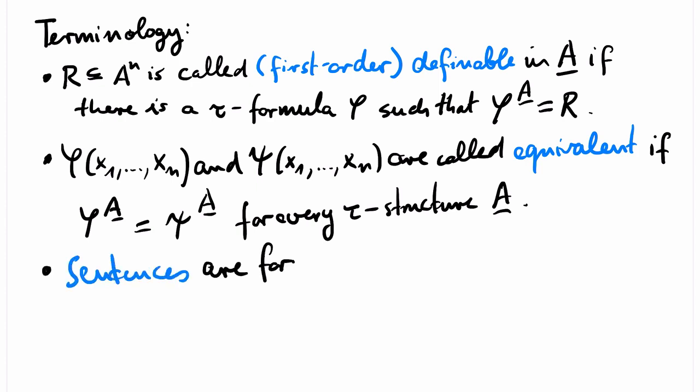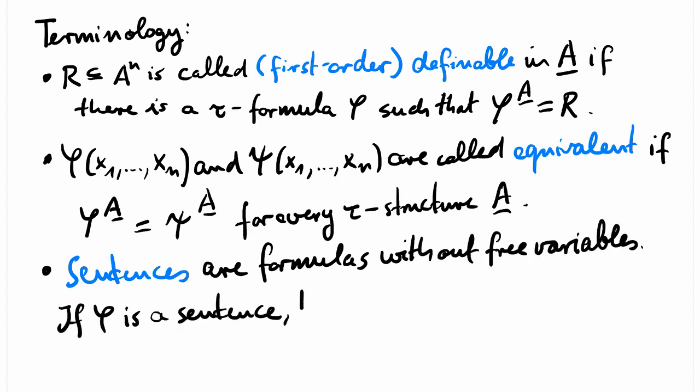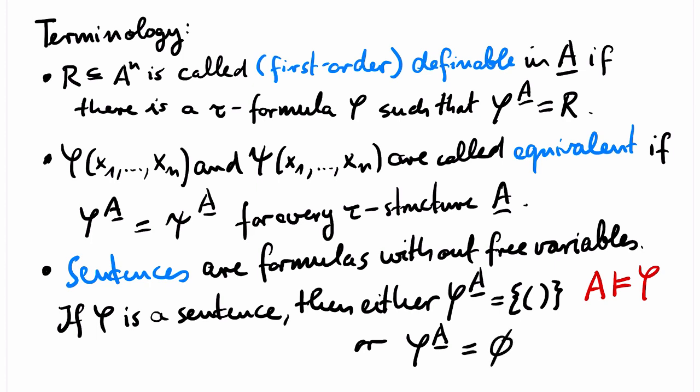Sentences are first-order formulas without free variables. If phi is a sentence, then phi superscript A must be a relation of arity 0. It is important to note that there are two such relations, the relation that contains the tuple of length 0 and the empty relation. In the first case, A satisfies phi. We also say that phi is true in A. In the second case, A does not satisfy phi. This is equivalent to saying that A satisfies not phi.